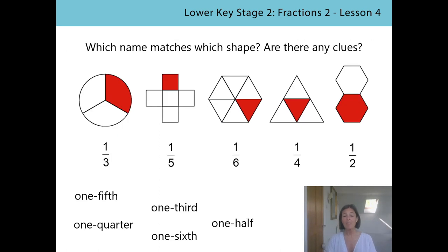Did you know that fractions have names as well as the fraction notation that we've been practising writing? Some of these words are probably already familiar to you, because I bet you've used them already in your maths, and also in other things - for example, we talk about a quarter past two and half past three when we're talking about time. Have a look at these words and see whether you can work out which fraction they match up with. Some might be quite obvious, others you might need to spot some clues in the words. We've got one fifth, one quarter, one third, one sixth, and one half.